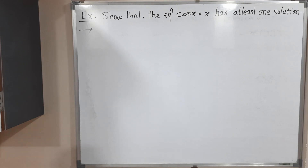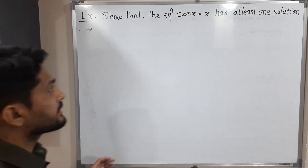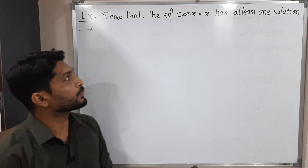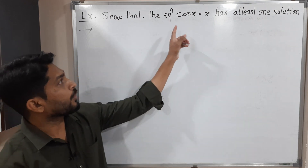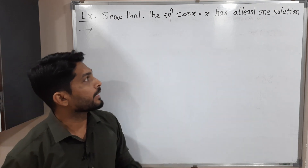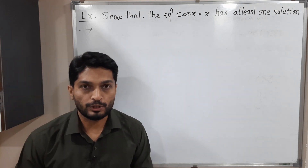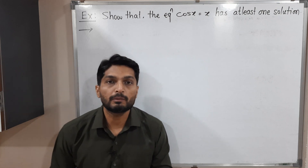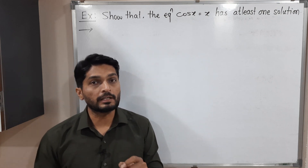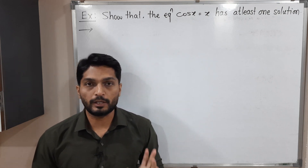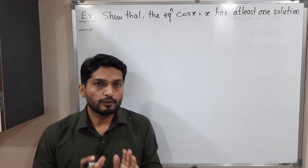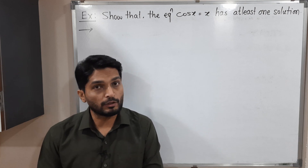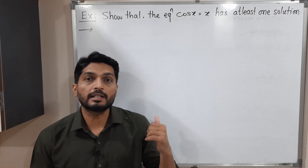Hi everyone. In this video we are going to discuss this example: we have to prove that cos x is equal to x has at least one solution. We will solve this example with the help of the Intermediate Value Theorem. First we will try to understand what is the actual meaning of it, and then we will discuss this example.